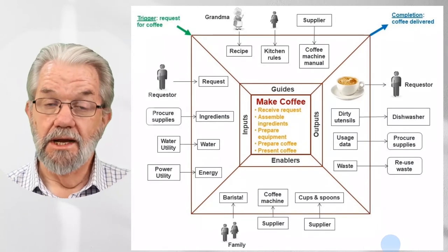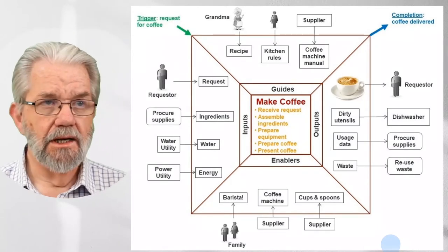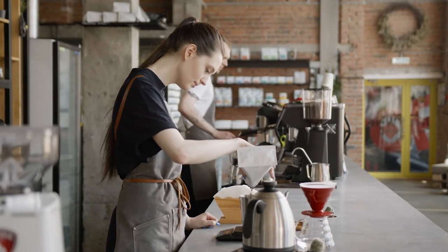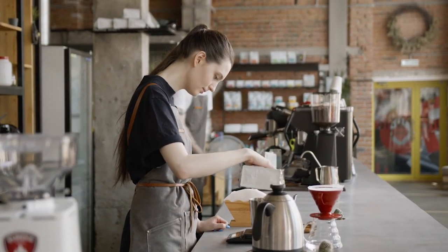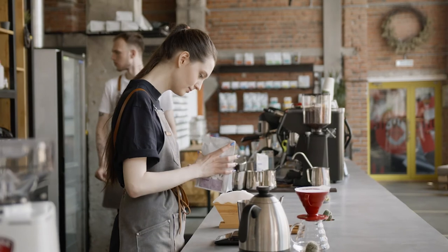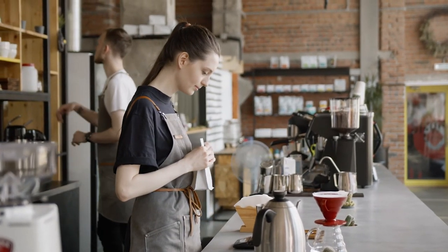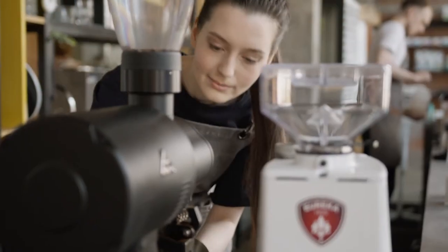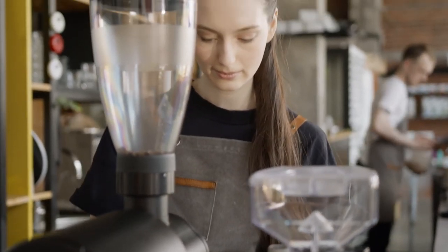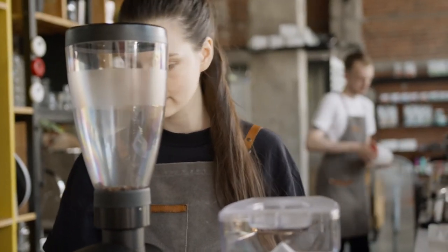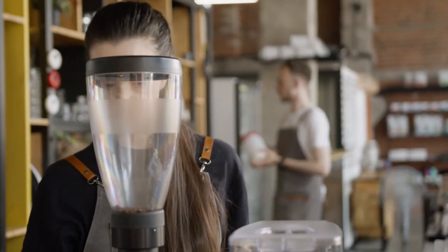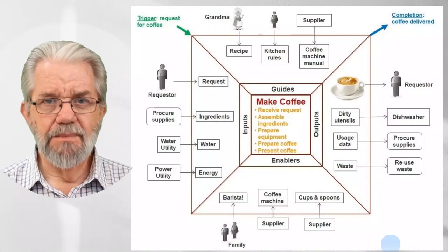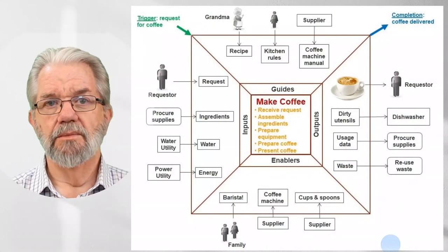To complete the picture, we have enablers — the people, systems, and facilities that enable the transformation of inputs into outputs. Here we have a barista, who at home is a member of the family; a coffee machine; and cups and spoons that came from suppliers. It's a simple example, but it starts to show how we can build much deeper knowledge about the process.